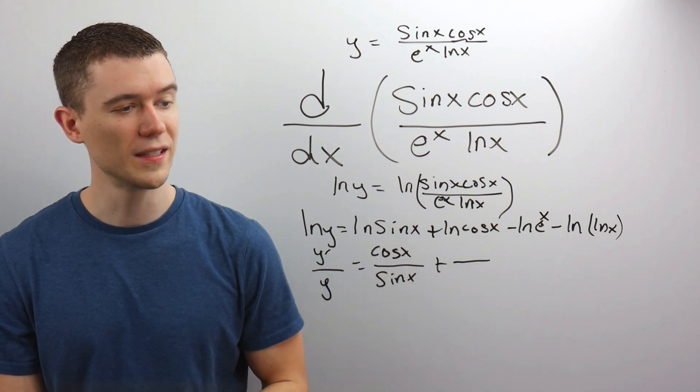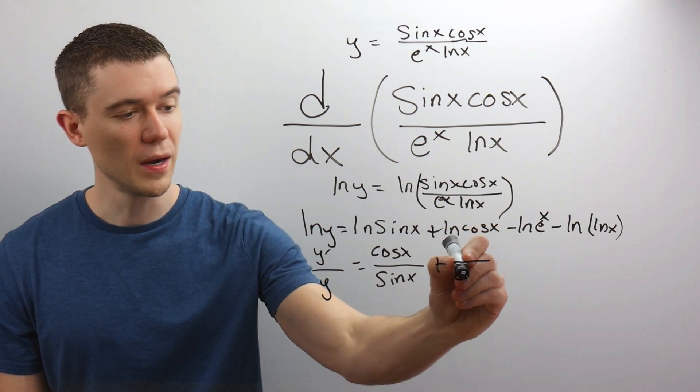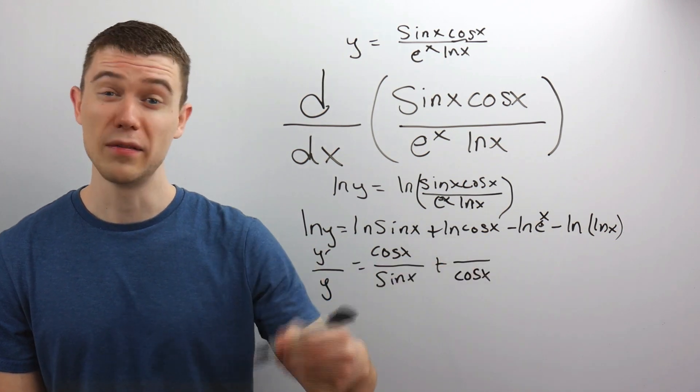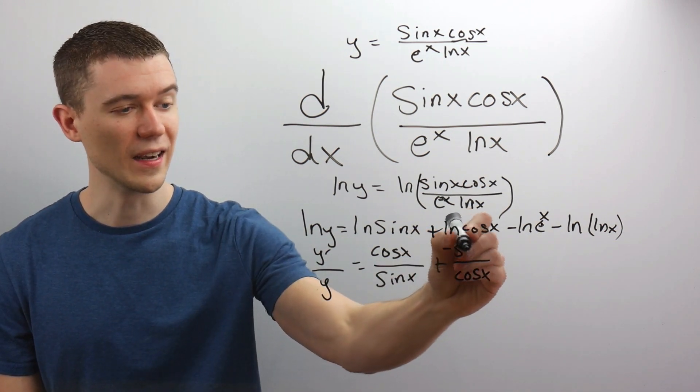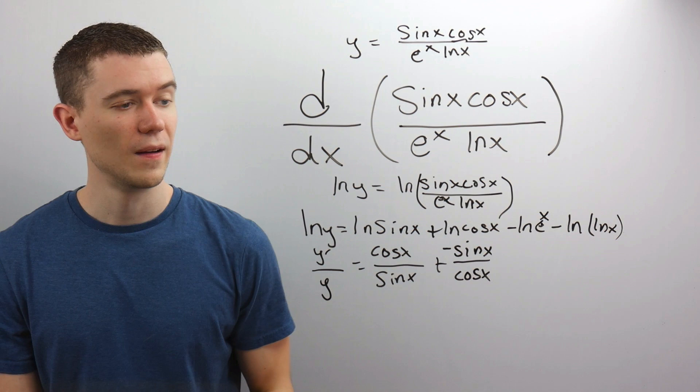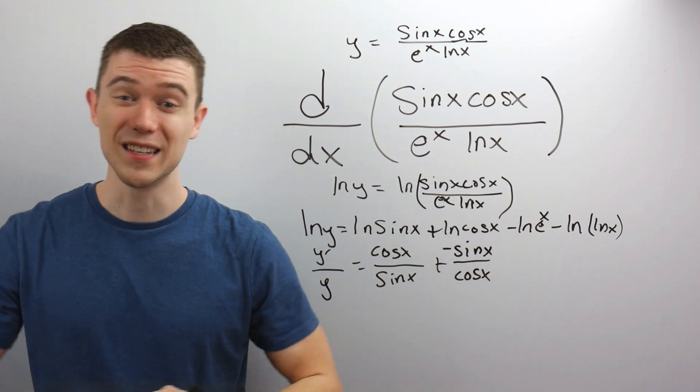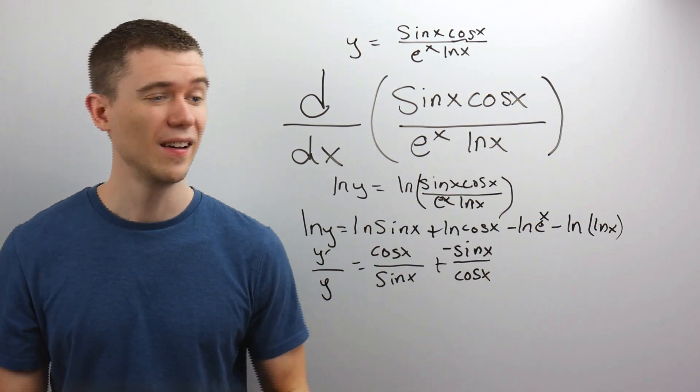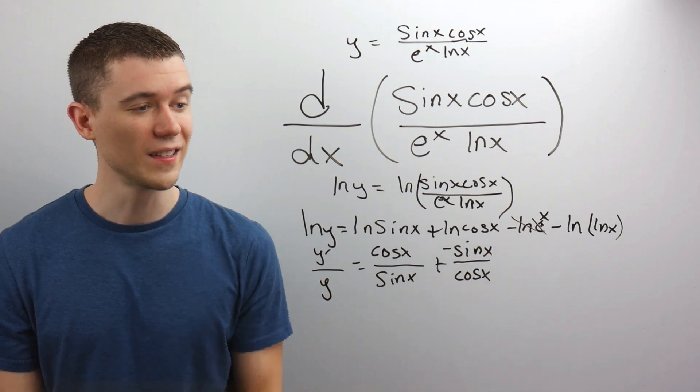The derivative of ln of cosine. Well, I put the cosine on the bottom. The derivative of cosine. I think that's a negative sine. This is pretty convenient because I have an ln of an e. Well, those actually cancel out. ln of e.